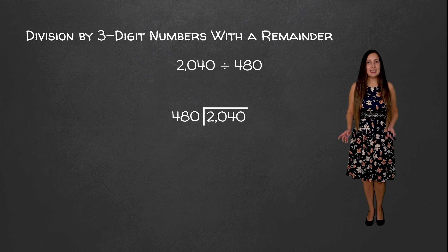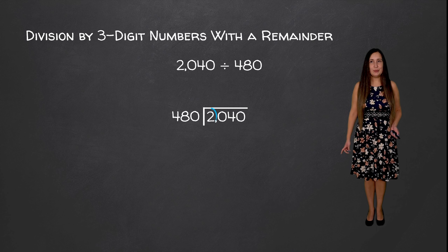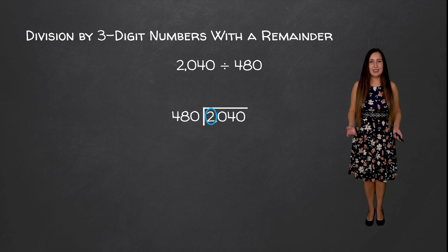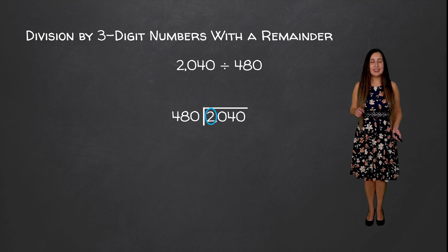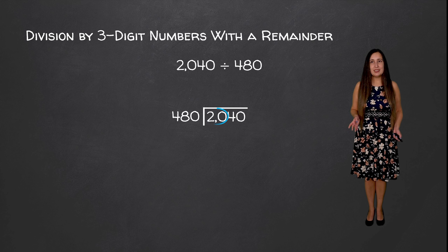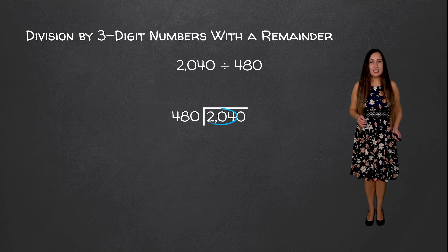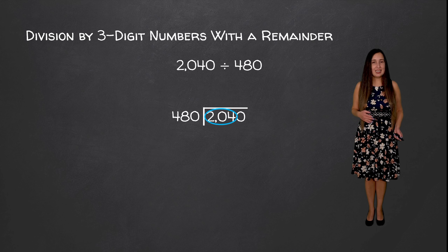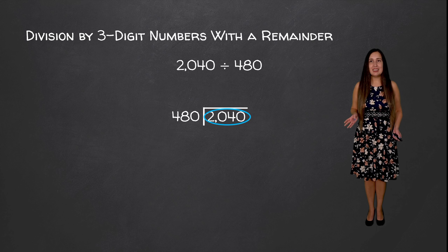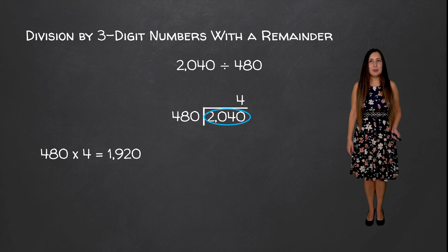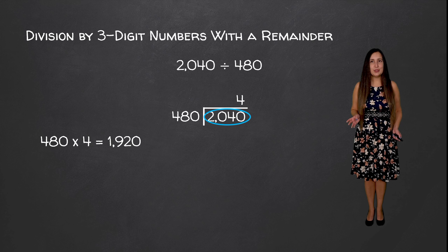First, we want to see how many times 480 goes into 2. It doesn't, because 480 times 0 is 0, and 480 times 1 is 480, which is too large. For that same reason, 480 does not go into 20, and for that very same reason, 480 does not go into 204. But 480 does go into 2040 four times, because 480 times 4 equals 1920.